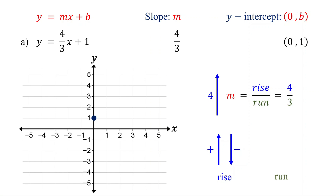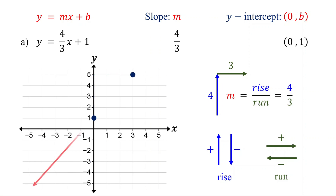Similarly, when the run is positive, we move to the right. When it is negative, we move to the left. For our example, the run is positive 3, so we move 3 units to the right. Now, starting from the y-intercept, move up 4 units. Then move to the right 3 units and plot the second point. Finally, draw a line that passes through the points.